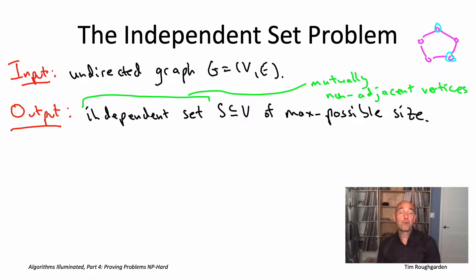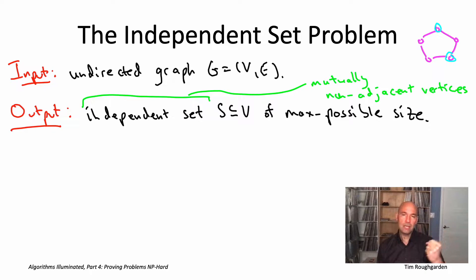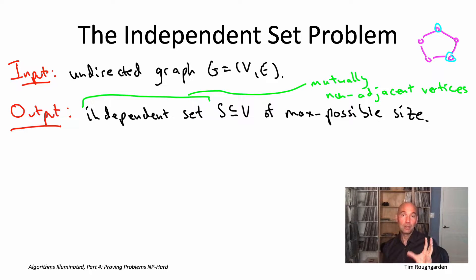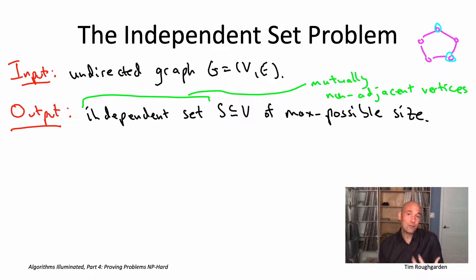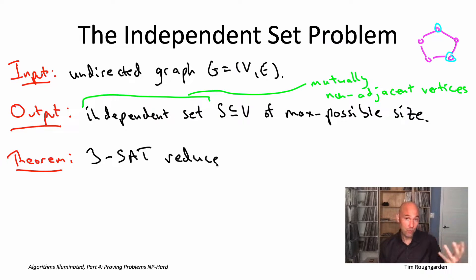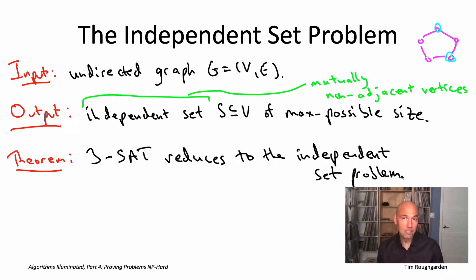So how are we going to prove that? We're going to use our two-step recipe: choose an NP-hard problem A and reduce it to the independent set problem. At the moment we really only have one NP-hard problem to work with, which is the 3SAT problem offered by the Cook-Levin theorem. So to get started, our hand is forced — we need to reduce the 3SAT problem to the independent set problem.